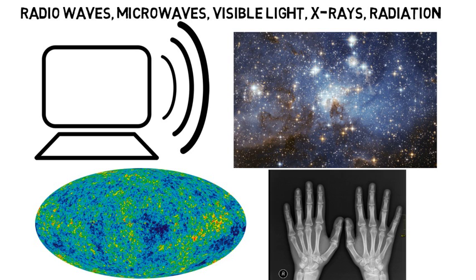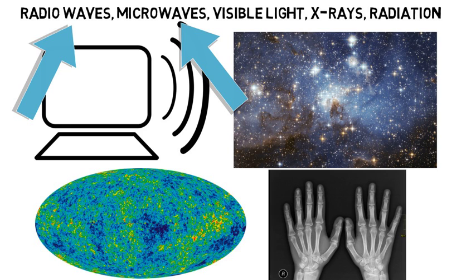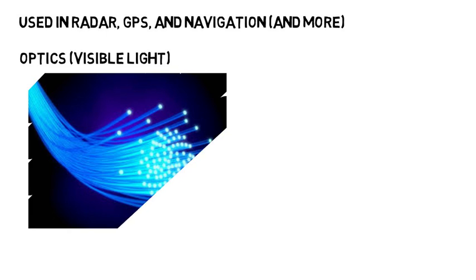Electrical engineers mostly only care about the radio waves and microwaves, the ones that we use to communicate with each other. Microwaves are just radio waves that have a higher frequency. They are used in radar, GPS, and navigation, and of course, heating up your food. Some electrical engineers may concentrate in optics, where they would care about visible light as well, such as for fiber optic communication.